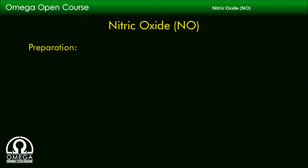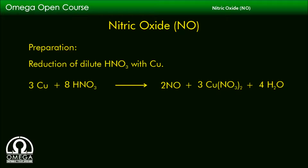In the laboratory, it can be prepared by reduction of dilute HNO3 with copper. The reaction involved is: 3Cu + 8HNO3 reacts to form 2NO + 3Cu(NO3)2 + 4H2O.